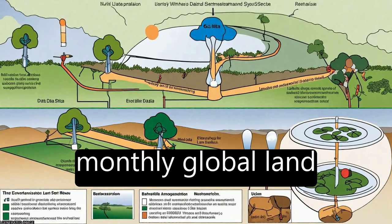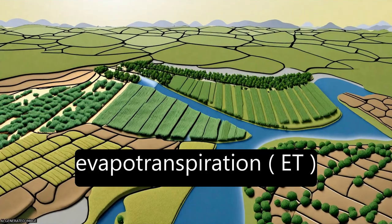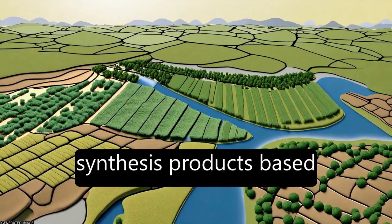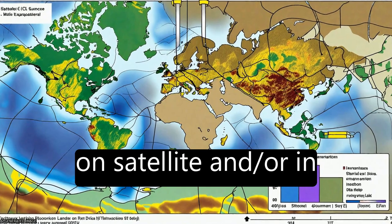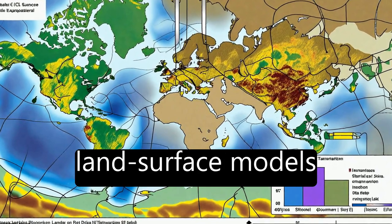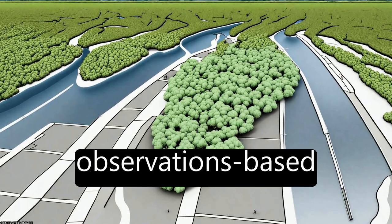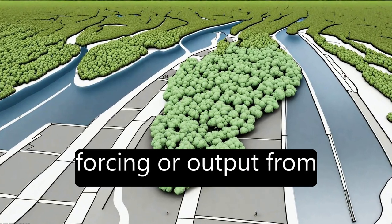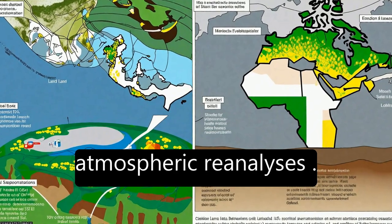The study presents monthly global land evapotranspiration (ET) synthesis products based on satellite and/or in-situ observations, land surface models driven with observation-based forcing, or output from atmospheric reanalyses.